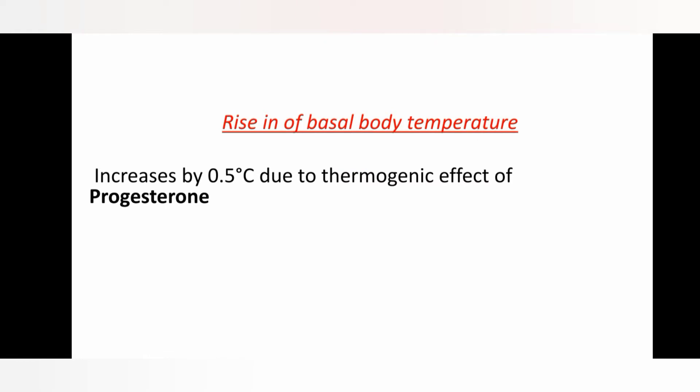Following ovulation, there is an increase of 0.5 to 1 degree rise in the basal body temperature. This is because when ovulation takes place, the Graafian follicle converts into corpus luteum, and this corpus luteum secretes progesterone. Progesterone has a thermogenic effect, so the rise in basal body temperature is because of the thermogenic effect of progesterone.